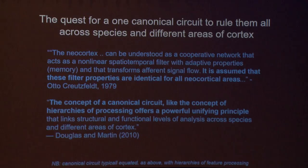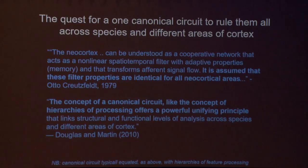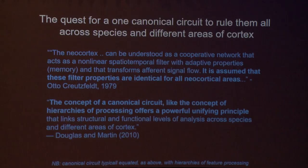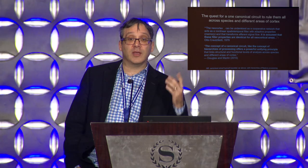Just to show you that I'm not talking about a straw man, there are quotes going back 40 years to people saying things like, 'The brain can be seen as a cooperative network that acts as a nonlinear spatiotemporal filter with adaptive properties' — that's exactly what a deep learning system is — 'that transforms afferent signal flow assuming these filter properties are identical for all neocortical areas.' So that's like saying the brain is just one big deep neural network. The concept of a canonical circuit gives you a powerful unifying principle, with hierarchies of processing — deep learning.